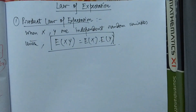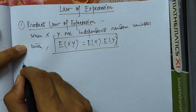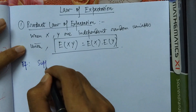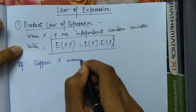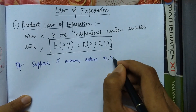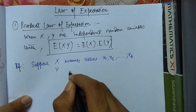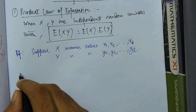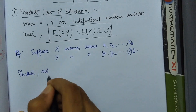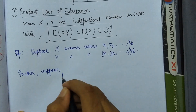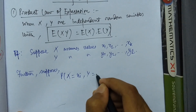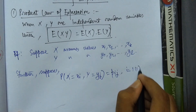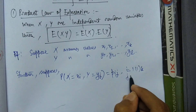For this proof, suppose X assumes values x1, x2, up to xk, and Y assumes values y1, y2, up to yl. Further suppose P(X = xi, Y = yj) = p_ij, where i runs from 1 to k and j runs from 1 to l.